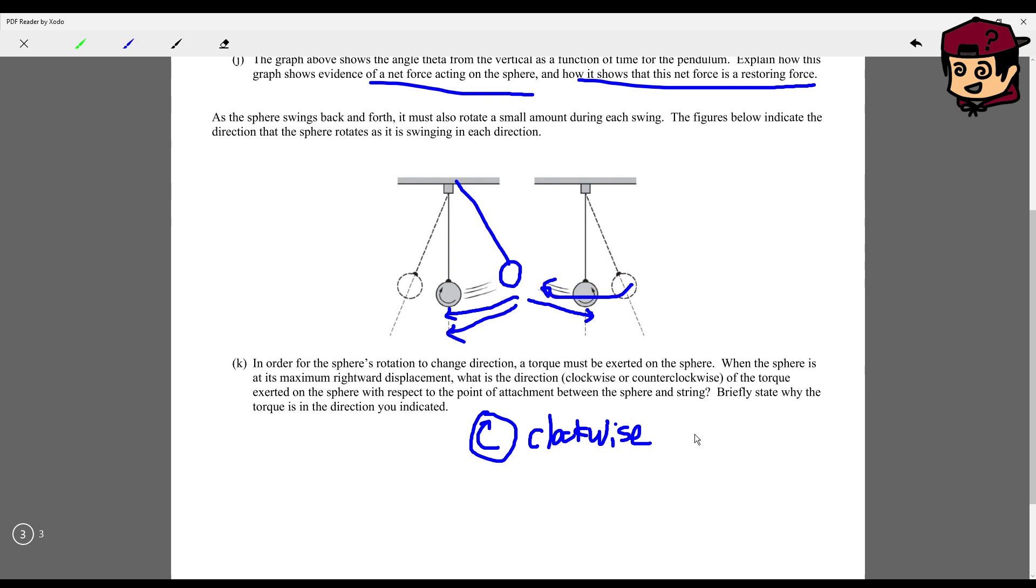They say briefly state why. Well, at the maximum displacement, this is your maximum value. It's already rotating. It's already starting to swing back to the left. So at the maximum rightward displacement, it's changing from counterclockwise to clockwise. So all you need to do is state that there's a change from counterclockwise to clockwise as shown in the diagram.